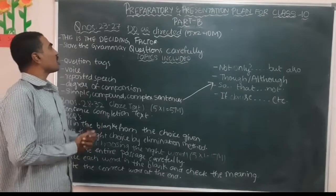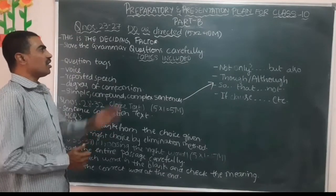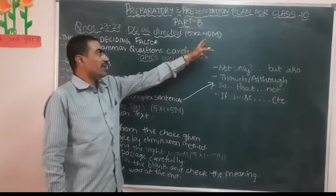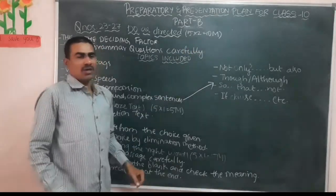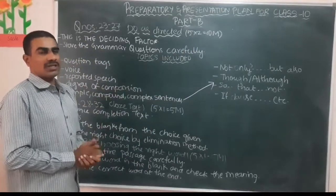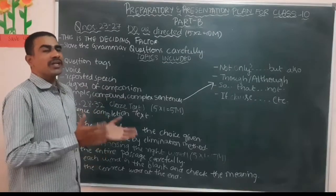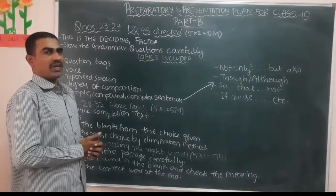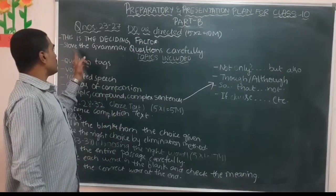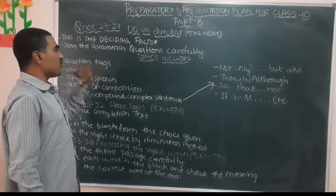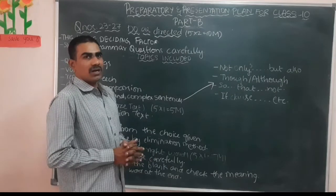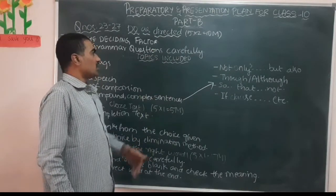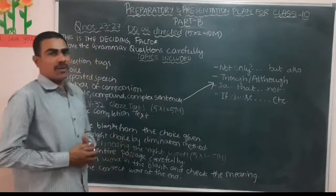Now let us look at question numbers 23 to 27: Do as Directed. This includes 10 marks, making it one of the most important and decisive sections to score well in. We have to be very careful, and here we are supposed to write grammar answers. There are certain topics included in this grammar section.